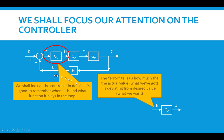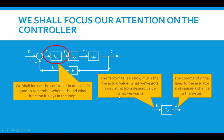The signal input into the controller is the comparison of the sensed value — the actual value goes through a sensor and becomes the sense value, which hopefully equals or has some relationship with the actual value — and then that's compared with the reference value. The error is a measure of how much the actual value is deviating from the reference value. The controller acts on the error signal and sends a command signal to the actuator to tell it to operate on the plant.